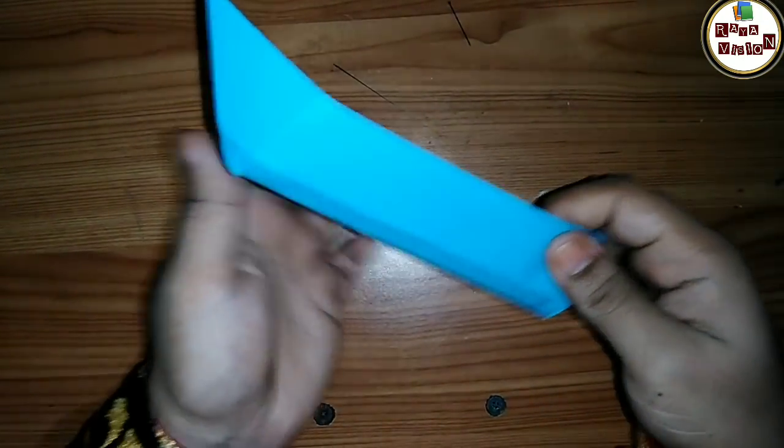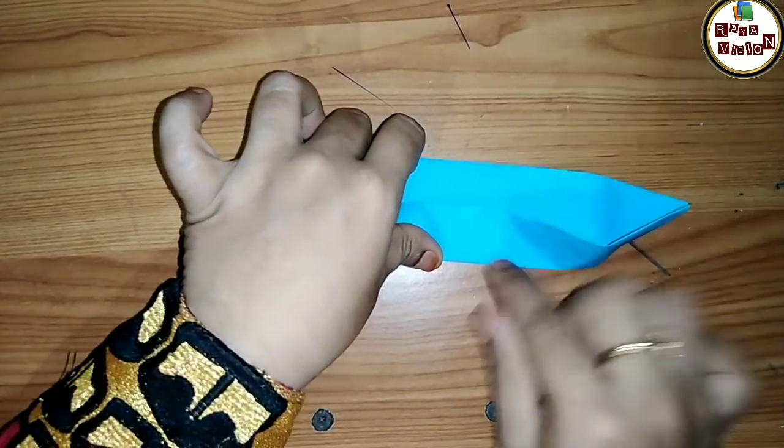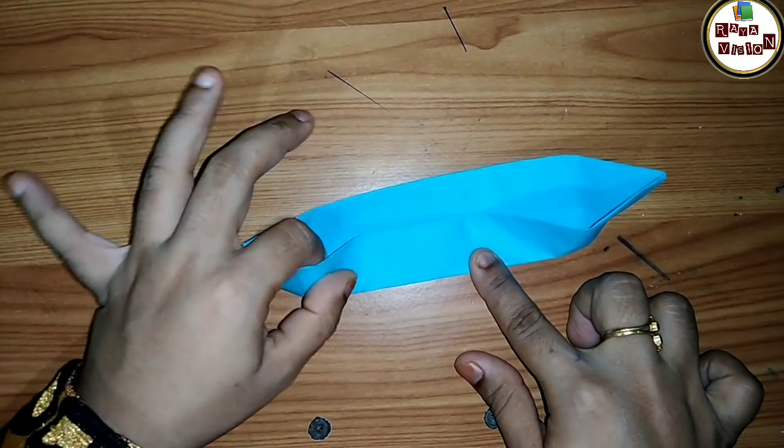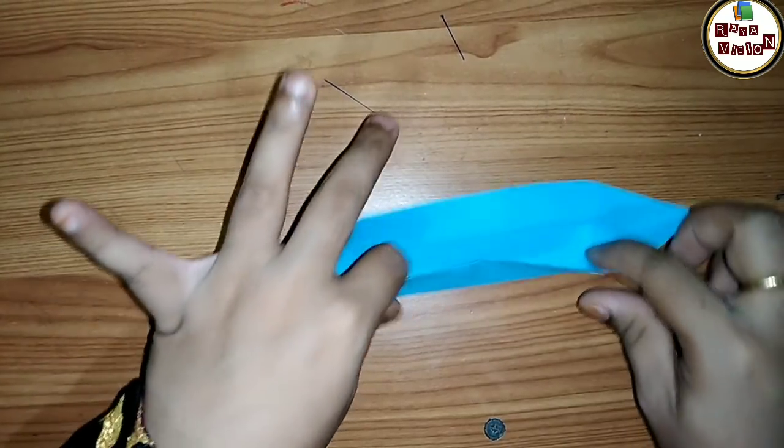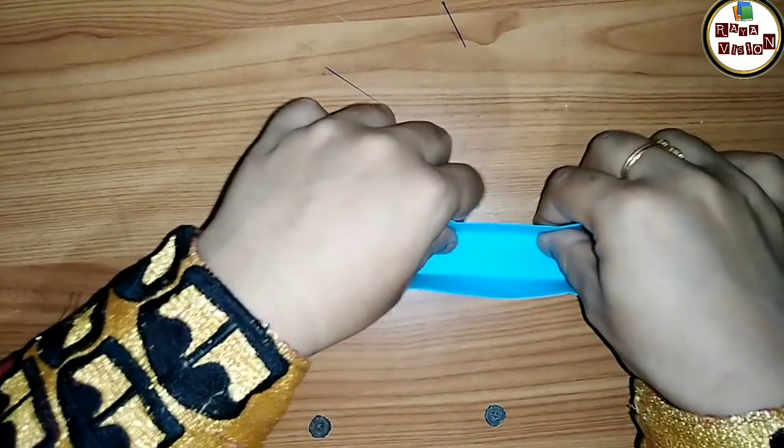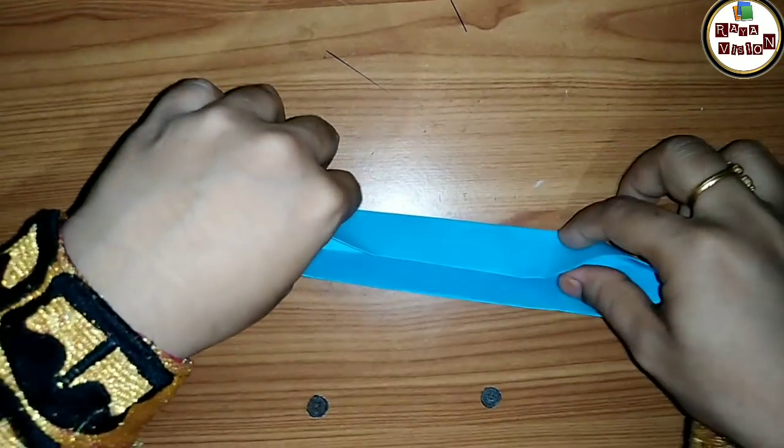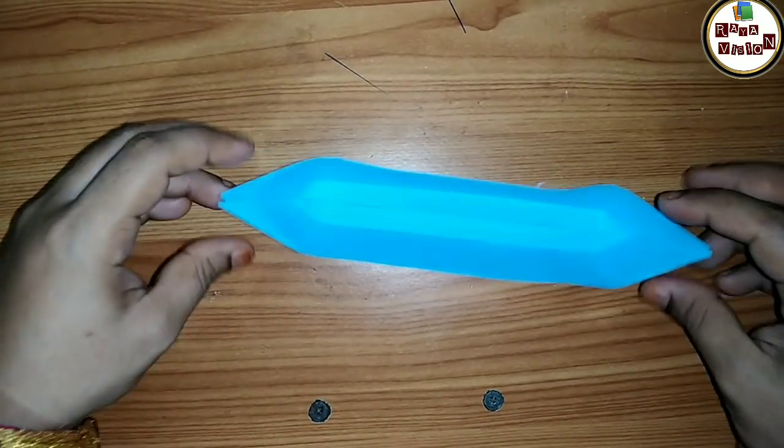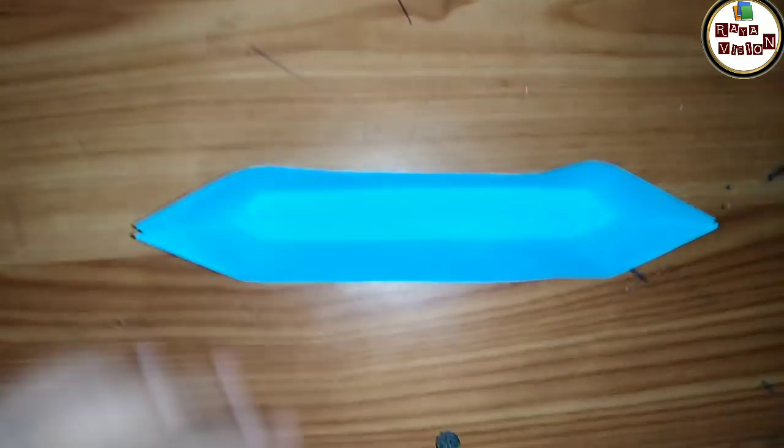To make it more finishing, fold the upper part also like this, just simple folds. Press it with your fingers and make it in the perfect shape. See, now your paper boat is ready.